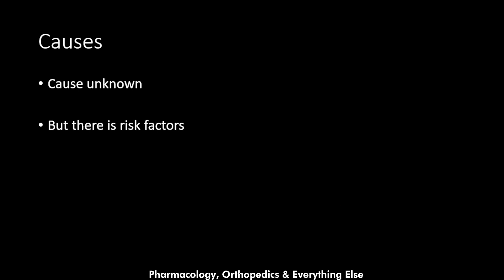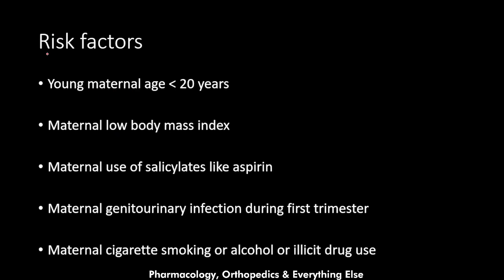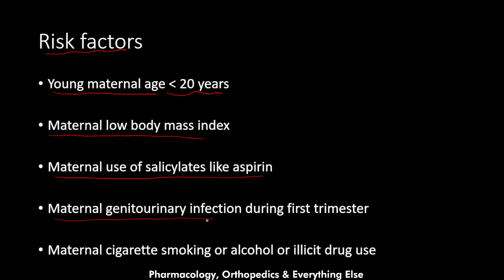The cause behind the premature regression of the right umbilical artery is unknown, but risk factors include: young maternal age (under 20 years), maternal low body mass index, maternal use of salicylates like aspirin, maternal genitourinary infections during the first trimester, and maternal cigarette smoking, alcohol, or illicit drug use.